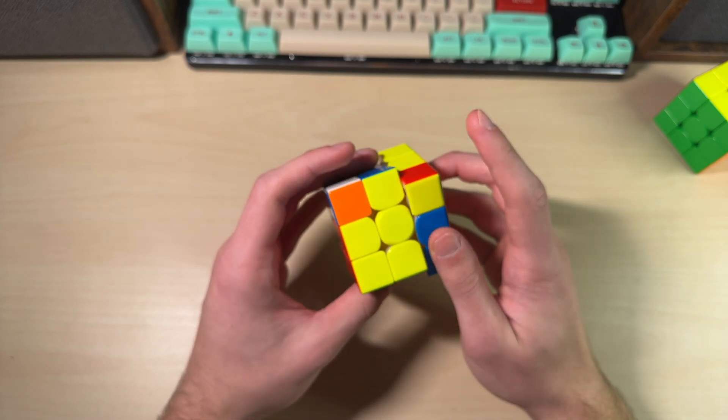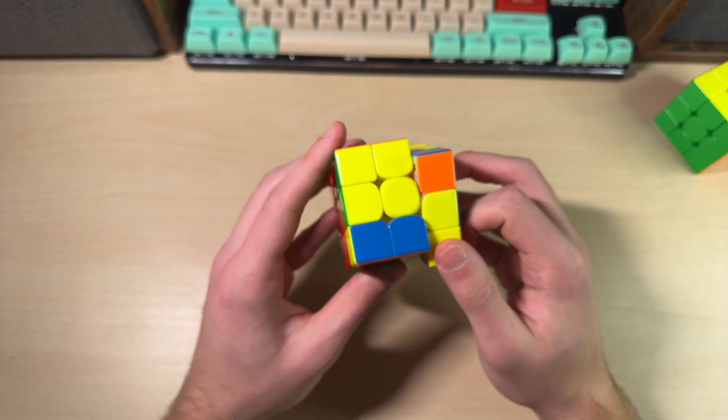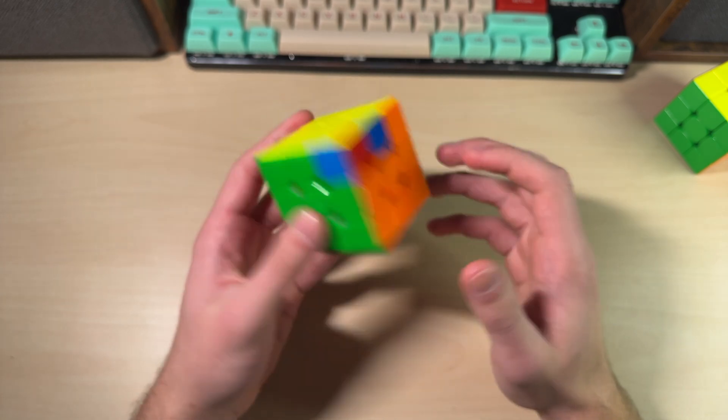Then you do an R. And then I have to reload my pointer finger to do this pinch. And then R', U', R. Just like that. And so the fast looks like this.